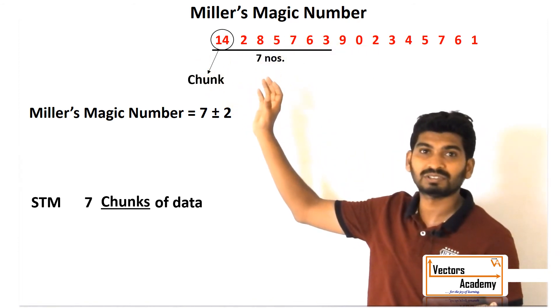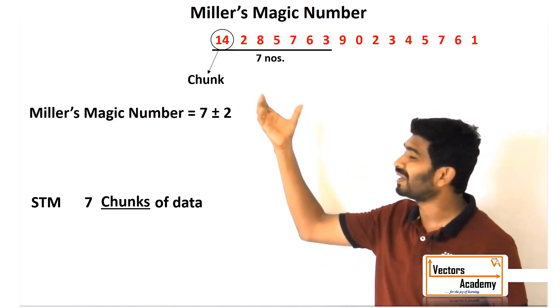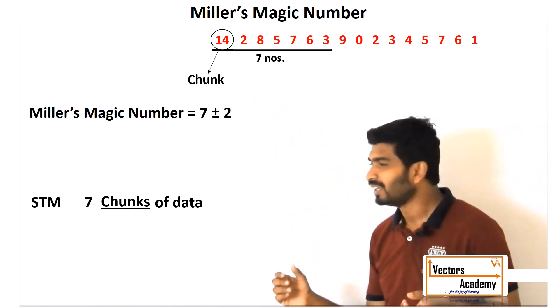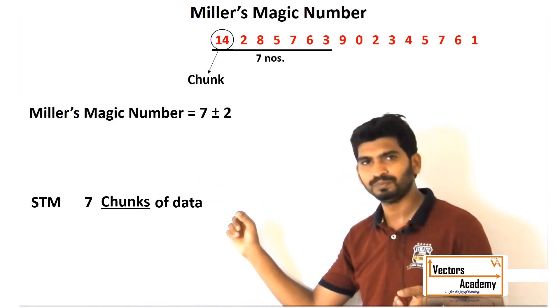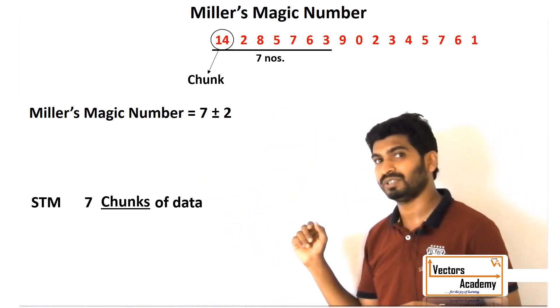In this way, the capacity of short-term memory is actually seven chunks plus or minus two, but the chunk size again depends upon the capacity of the individual.